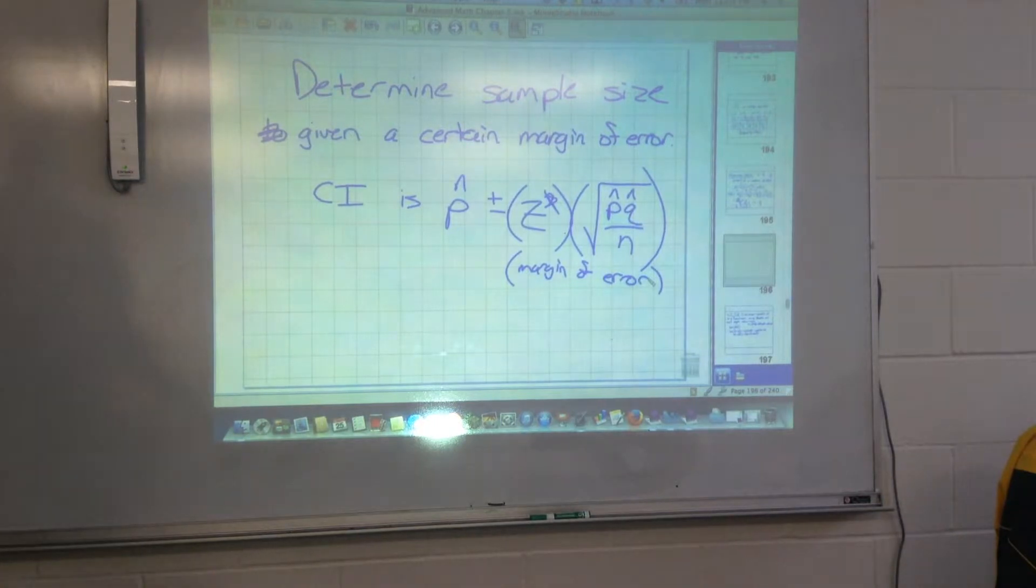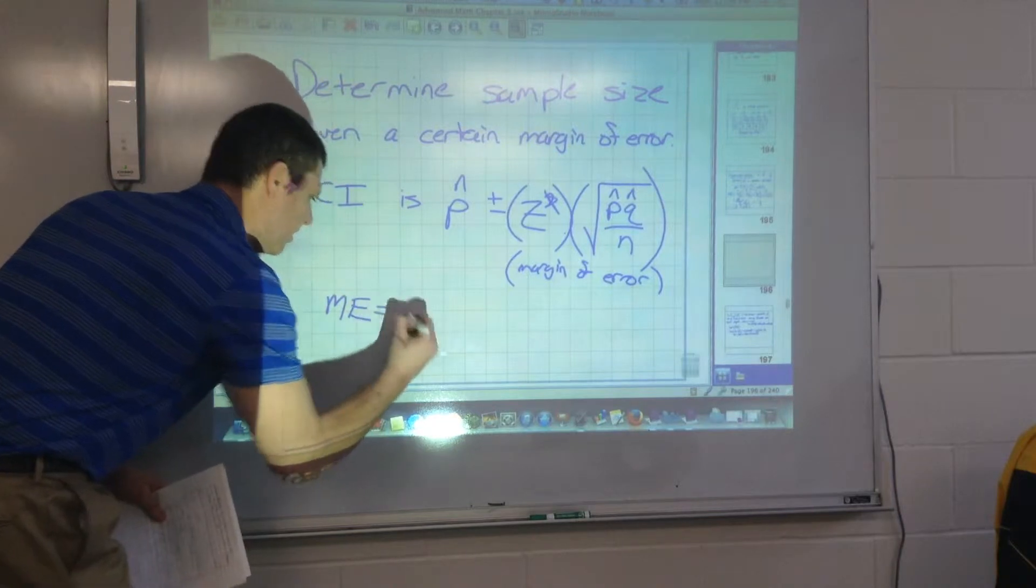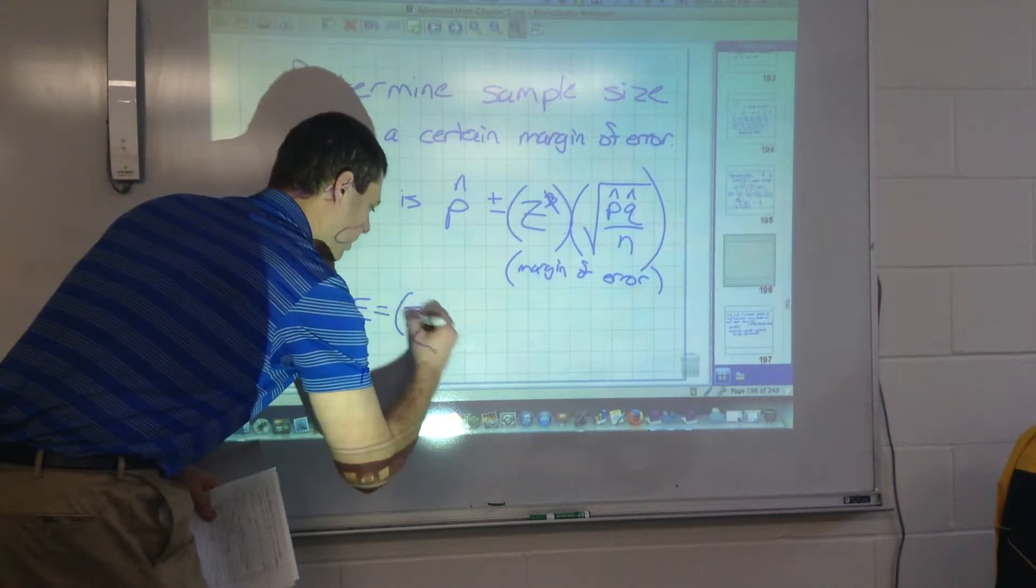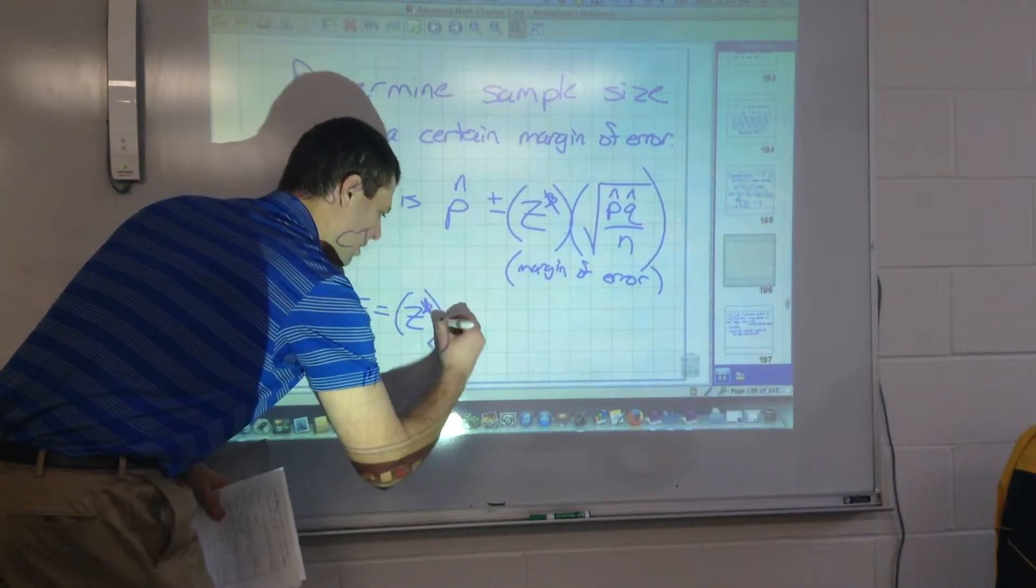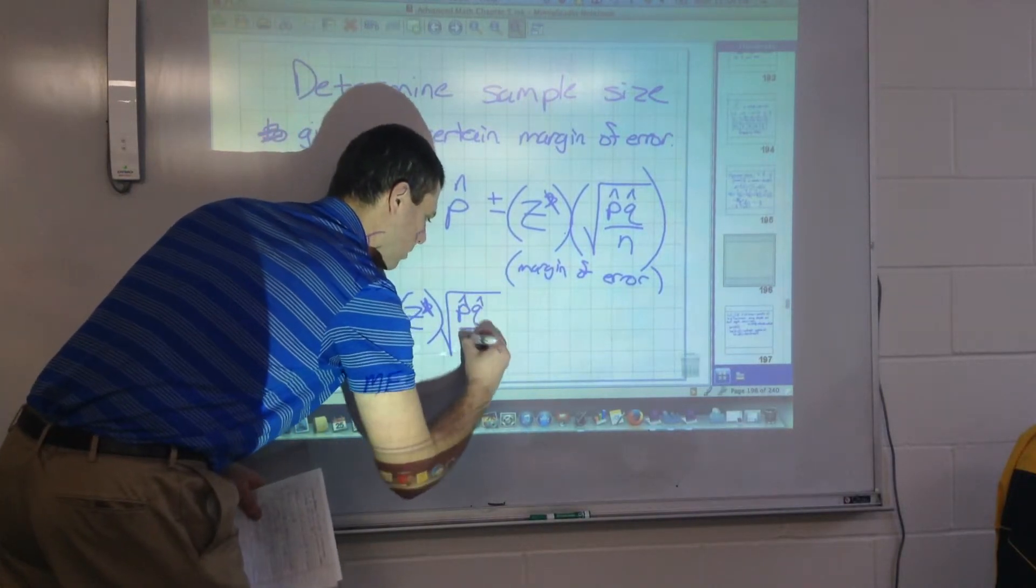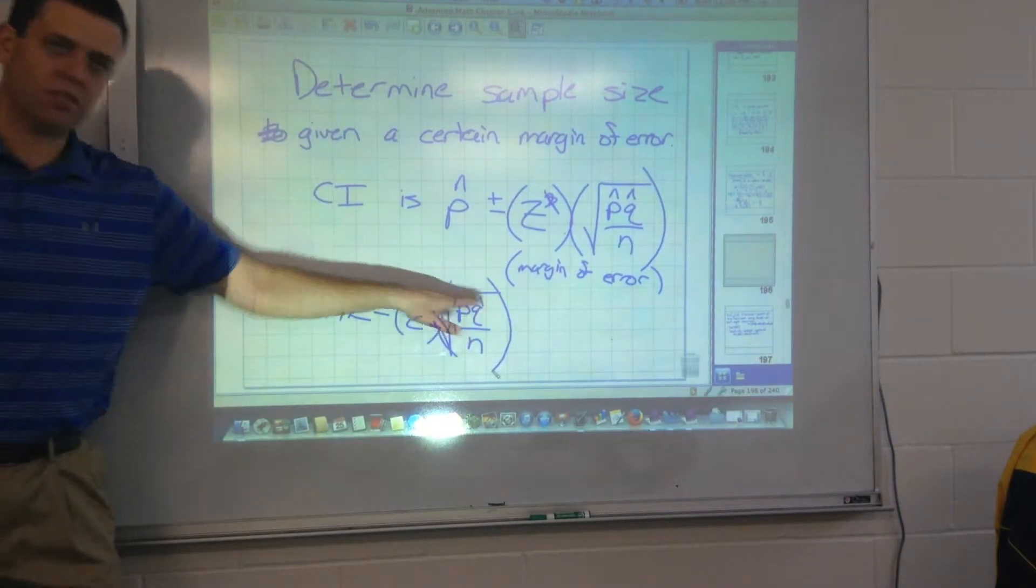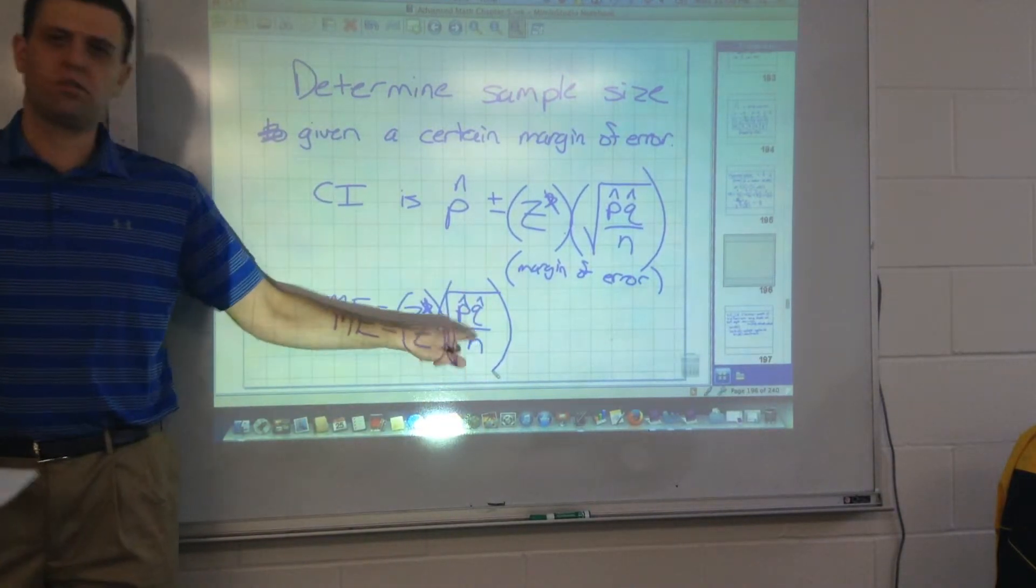So if you're given a certain margin of error that you want, you're just going to use the fact that margin of error is equal to z star times the square root of p hat times q hat over n, and you're just going to use this right here to solve for n.